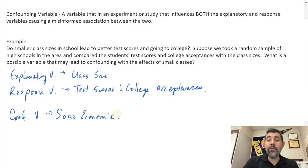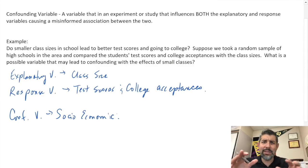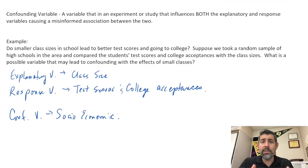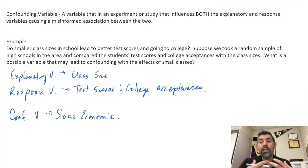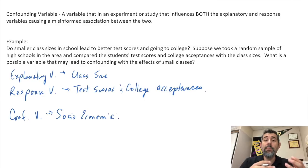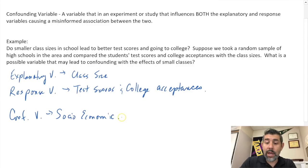Now in AP Statistics — or really any statistics — when we state what a confounding variable is, we want to state how it relates to both the explanatory variable and how it relates to the response variable. That way we clearly show the connection and the influence that it has on both of them.